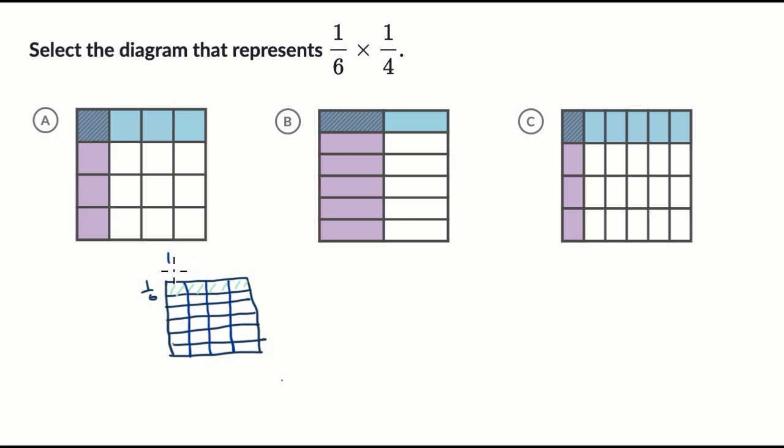So 1 sixth times 1 fourth. And so the fourth, let me do this in a light color so it doesn't write over. It would be that, let me do it in a color that you can actually see. It might be all of that right over there.